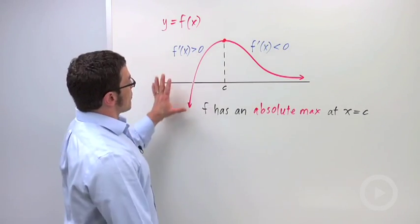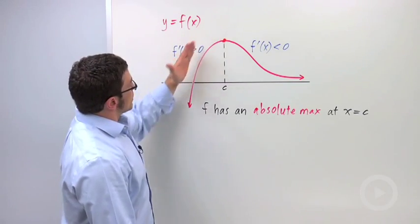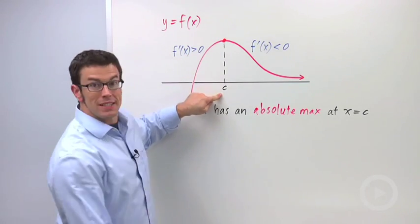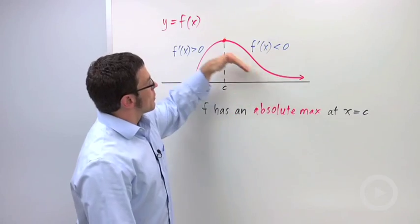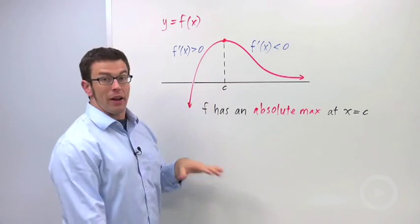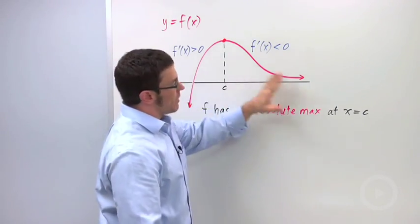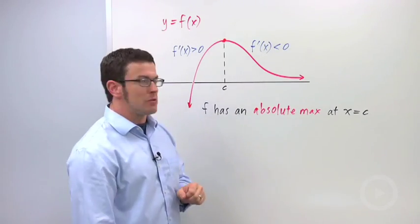Let's say you have a function y equals f of x, and the function has a positive derivative to the left of some critical point c, and a negative derivative to the right. Well then you can surmise that it has an absolute maximum at c. Now it has to have a positive derivative everywhere to the left and a negative derivative everywhere to the right. That will give you an absolute maximum.